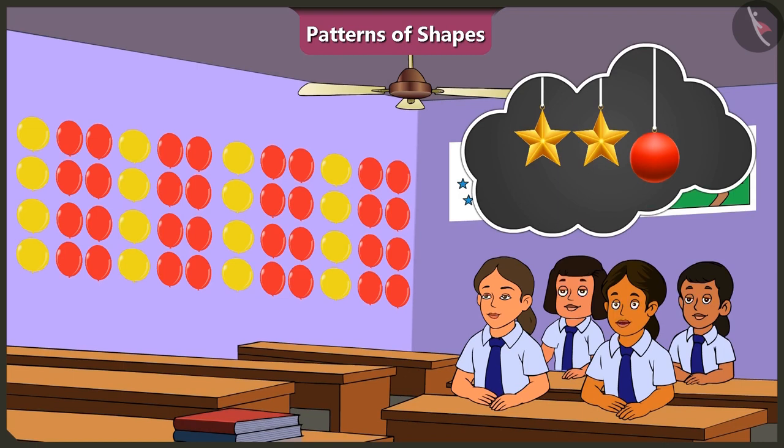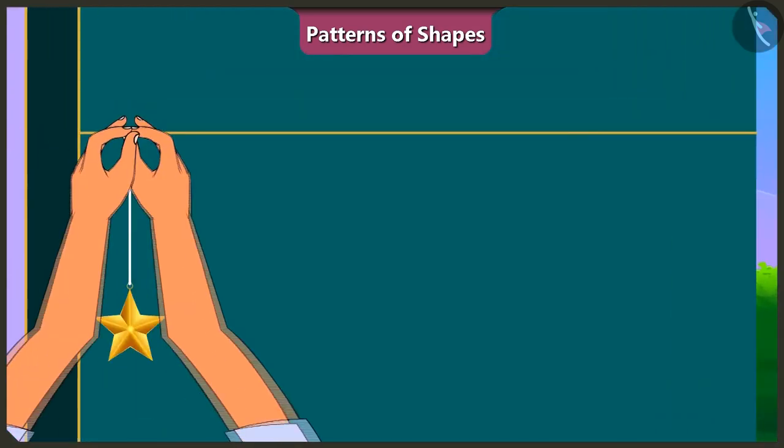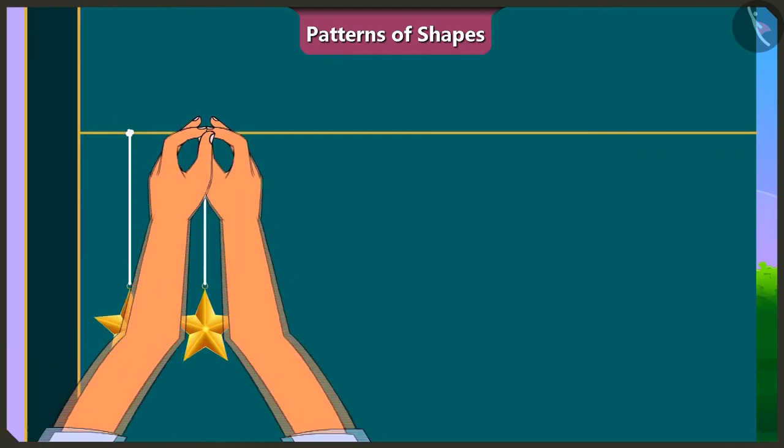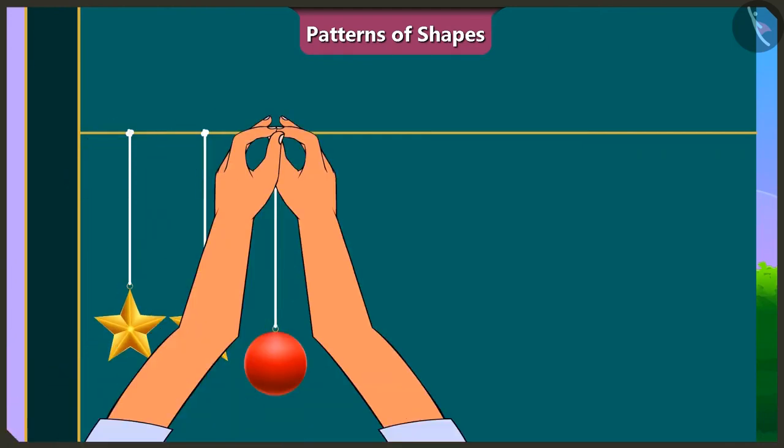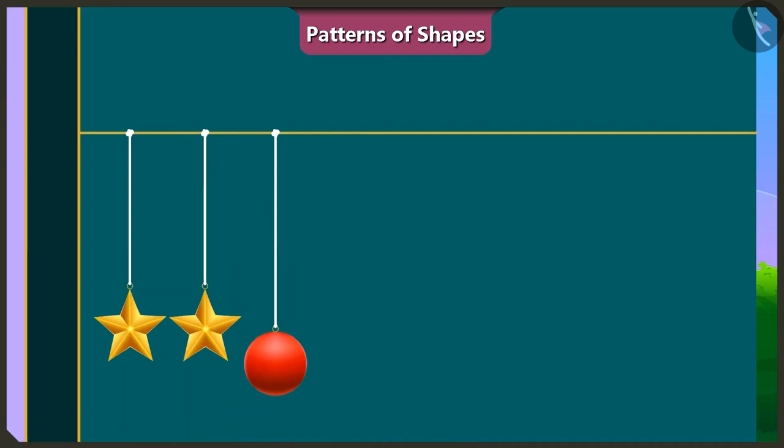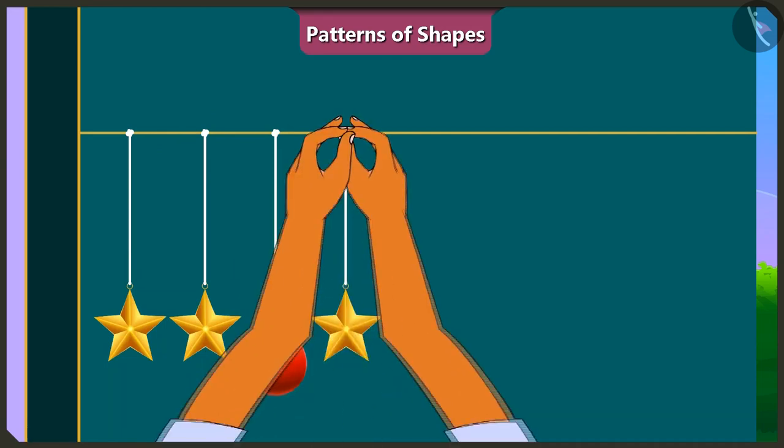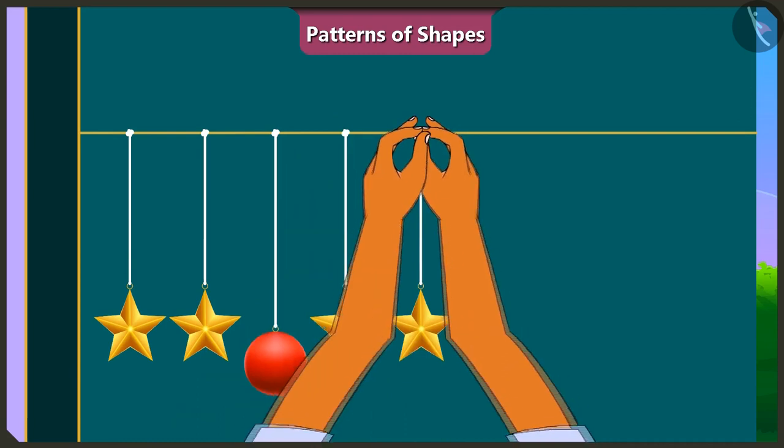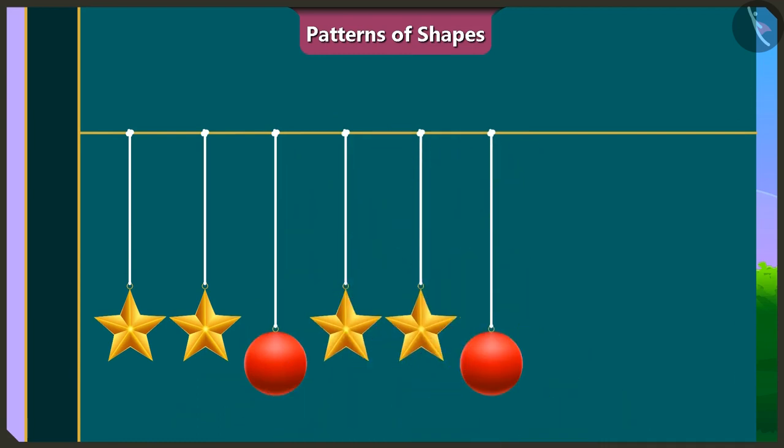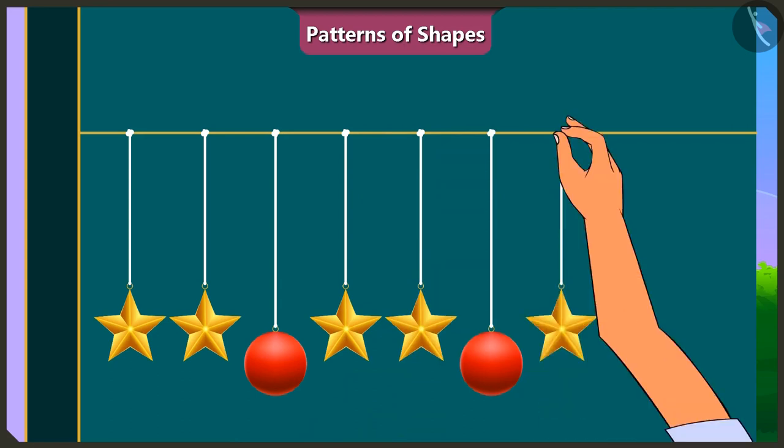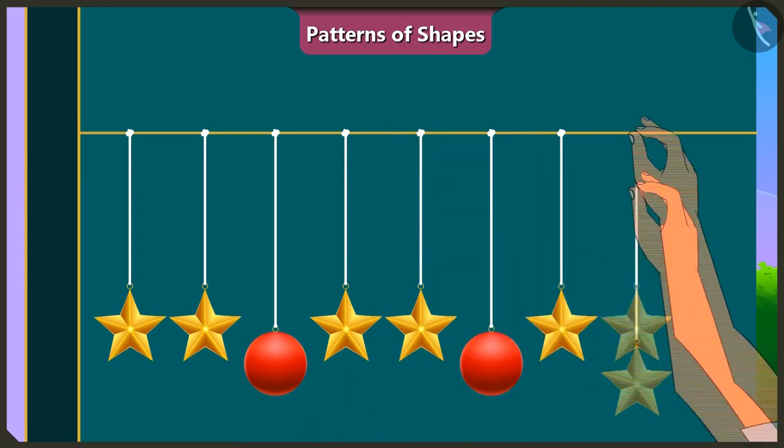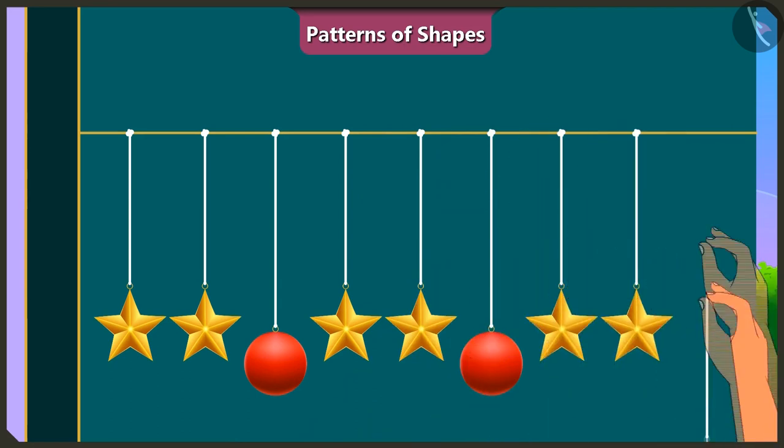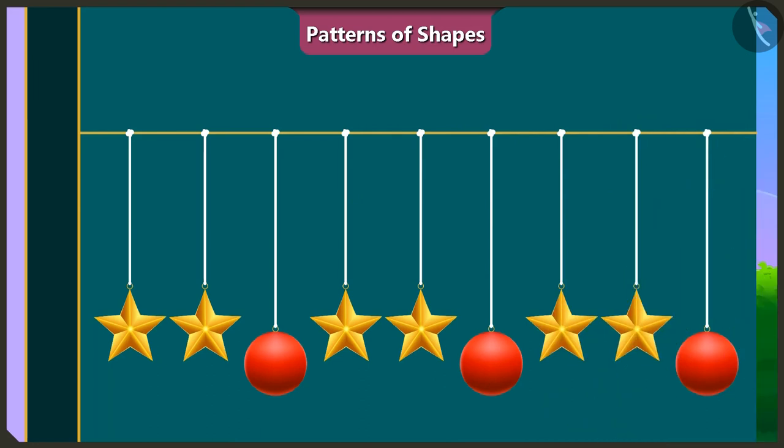Wow. We will make a great toran. We can put two stars and a sphere on a strong thread like this. Yes. And then we can put two stars and a sphere like this again. And we can continue with this pattern. Yes. And now the toran is complete by repeating this special pattern. The pattern of this toran is really beautiful.